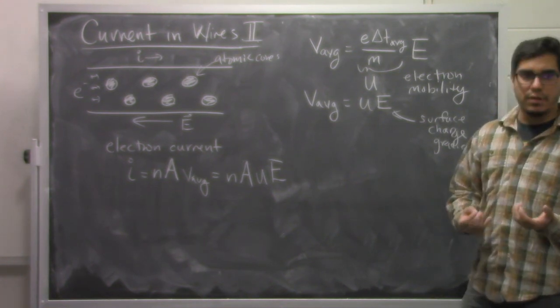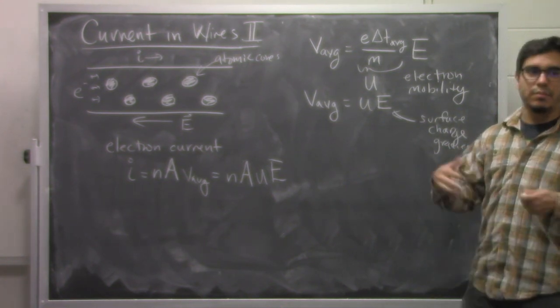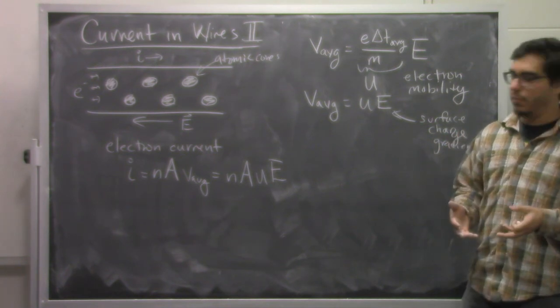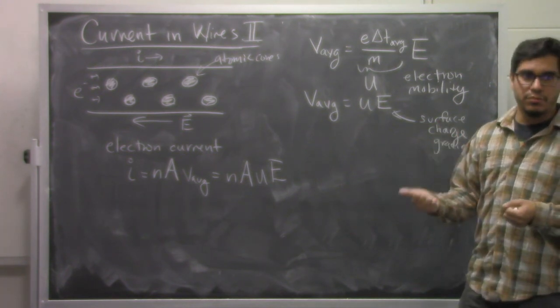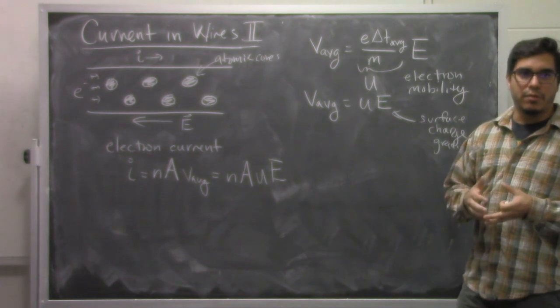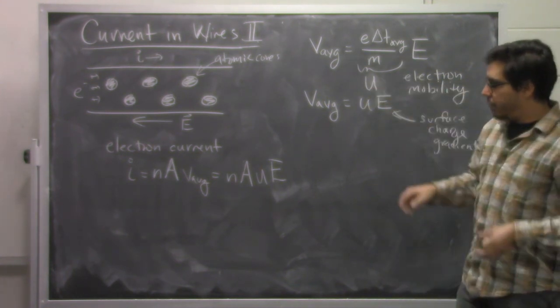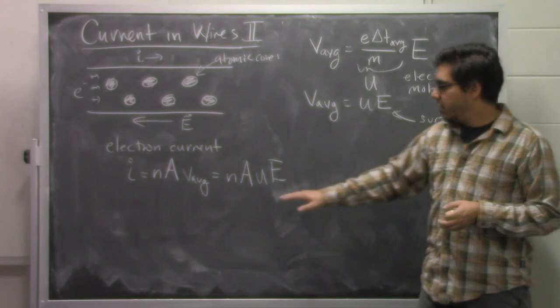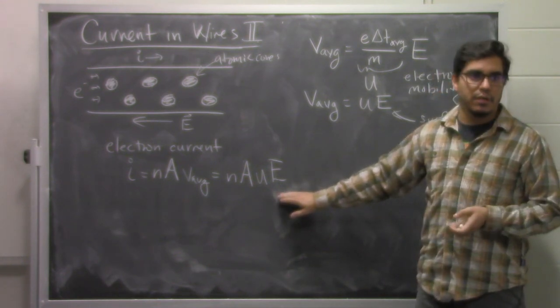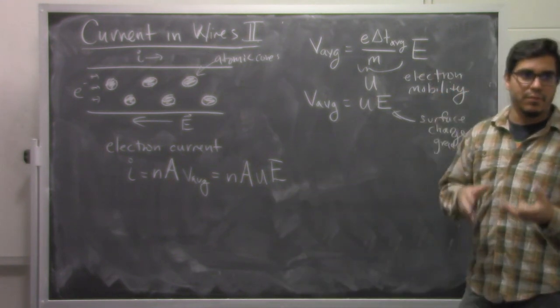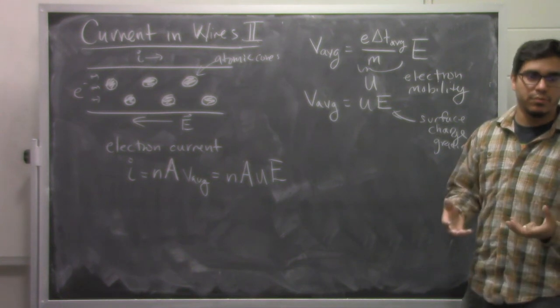All this stuff fits together in a really nice way because it says that we expect more electrons per unit time when we have more available to move around, when the wire is bigger, fatter, when we have more mobile electrons, and when the electric field that's applied is larger. All those things seem to fit with our intuition that we would get more electrons moving per unit time.